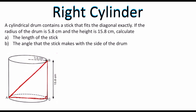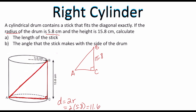Right here I have a 90-degree angle, so I do have a right triangle. I like to draw my right triangle separately — it helps me visualize exactly what I am doing to avoid making mistakes. I know the height is 15.8 and the radius is 5.8, so I need the diameter. The diameter is twice the radius, so 2 times 5.8 is 11.6. That means AC is 11.6 centimeters.